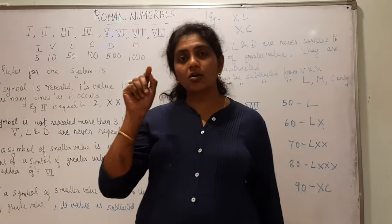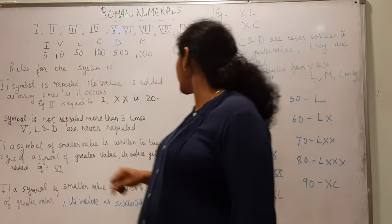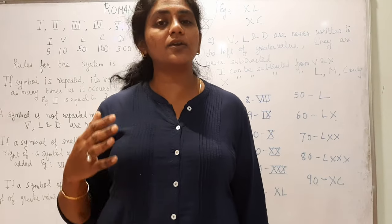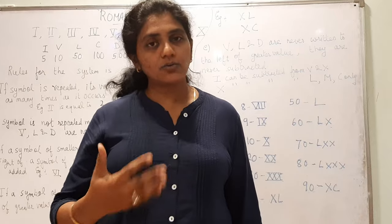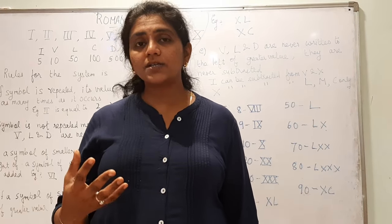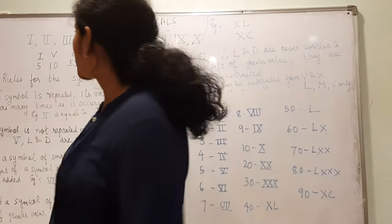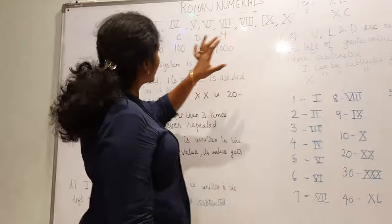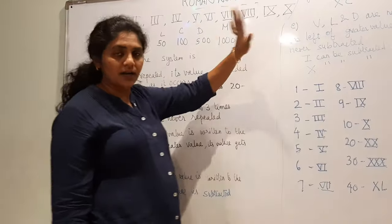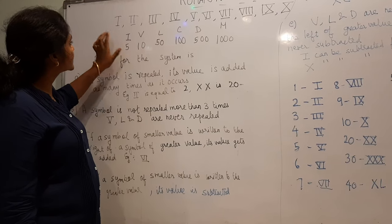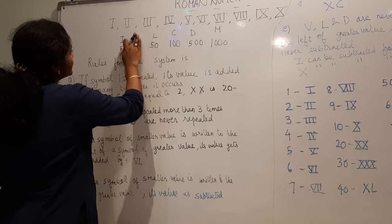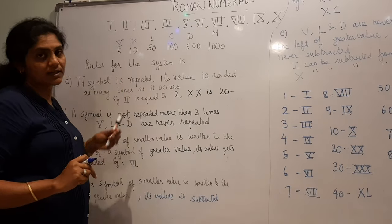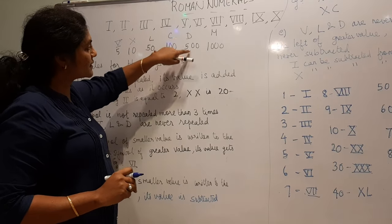Roman numerals — as you can see on a clock, numbers are written as 1, 2, 3, 4, 5, 6, like this. Here, I will refresh the concepts relating to Roman numerals. The basic symbols are: I is 1, V is 5, X is 10, L is 50, C is 100, D is 500, and M is 1000.